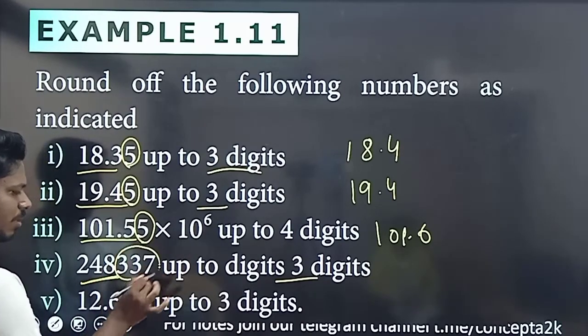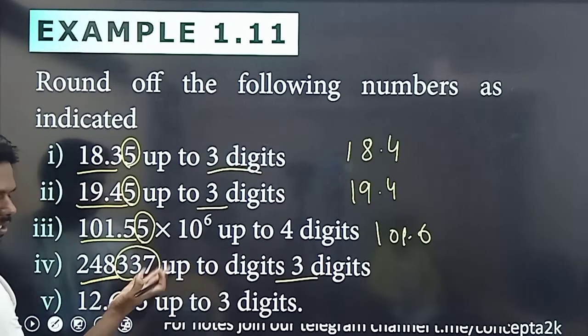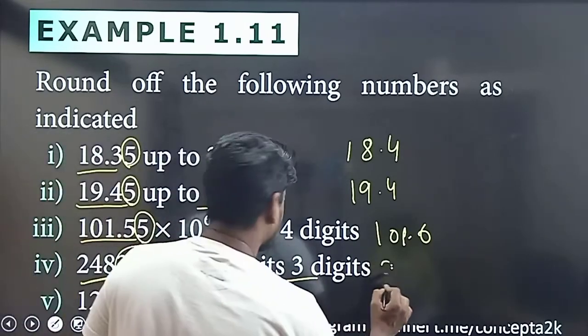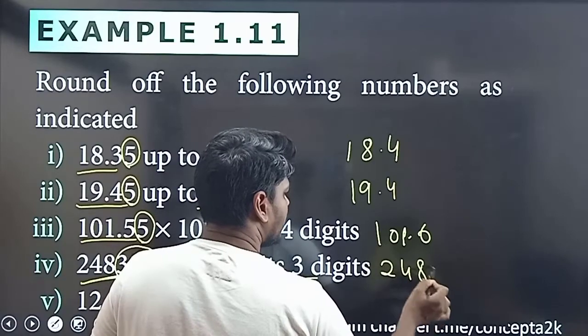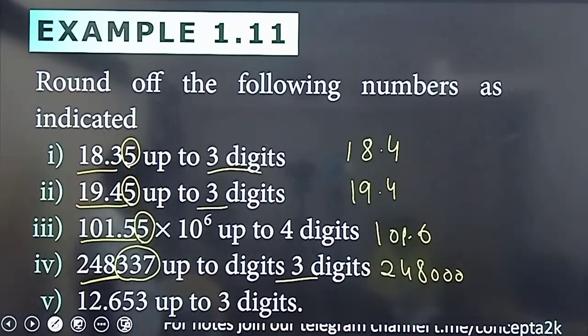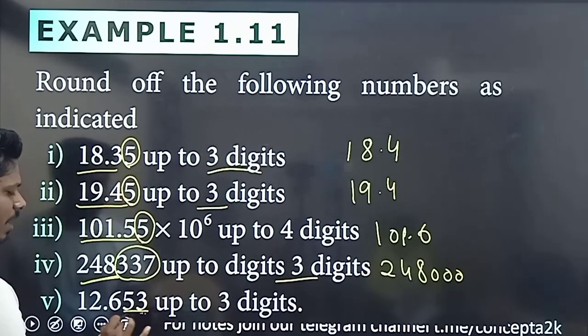Three. Now, we will round off these numbers. If this is less than five, then we will drop it. Basically, this is 248000. This is zero. This is three. Now, this is ninety.